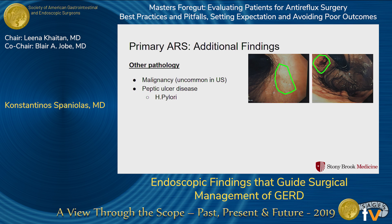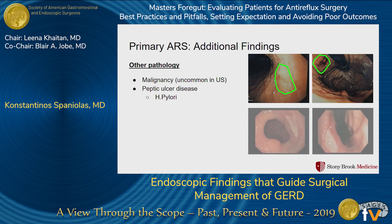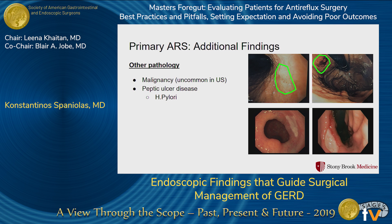Peptic ulcer disease is not very common, mostly because many of these patients are already on PPIs at the time of their endoscopy. But occasionally you'll find an ulcer. It's important to rule out H. pylori at that time, so that prior to going into further surgery for reflux disease, that problem is addressed and managed.